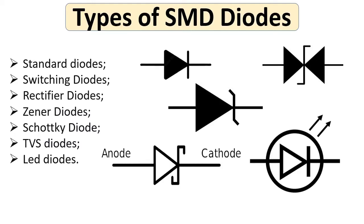In this video we're going to see the types of SMT diodes. There are seven important types: standard diodes, switching diodes, rectifier diodes, Zener diodes, Schottky diodes, TVS diodes, and LED diodes. This symbol represents standard diodes, and the same symbol is used for switching and rectifier diodes.